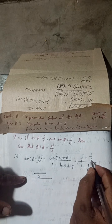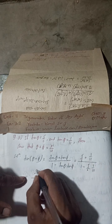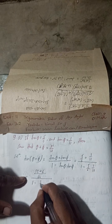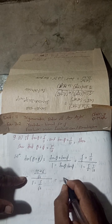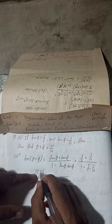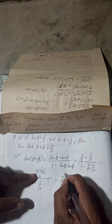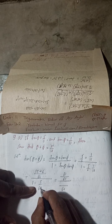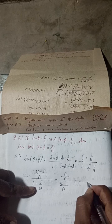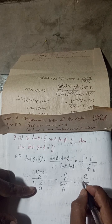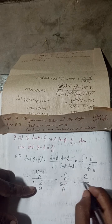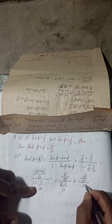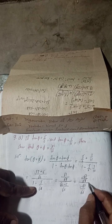The LCM of 6 and 11 is 66. So the numerator becomes: 55/66 plus 6/66, which equals 61/66. The denominator is 1 minus 5/66, which equals 66/66 minus 5/66 = 61/66. So tan(θ + φ) equals 61/66 divided by 61/66.